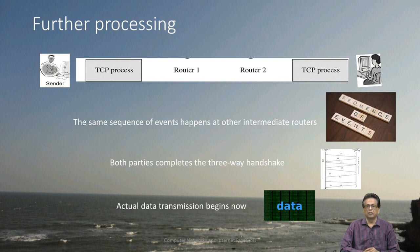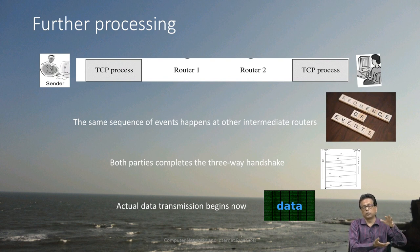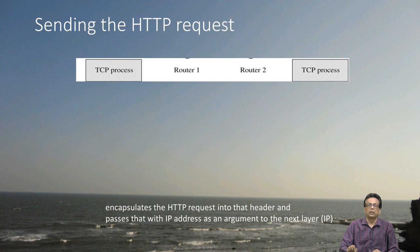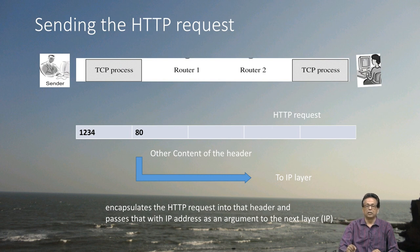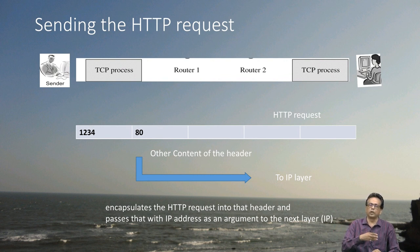Once that is done, actual data transmission begins. In this actual data transmission, the HTTP request is being sent and a response is received after all this processing. The HTTP request is constructed and the receiving port number 80 indicates HTTP client-to-server communication, and it sends this to the IP layer. Remember, this HTTP request is embedded into a TCP segment, and the TCP segment gives it to the IP layer, which embeds it into a packet. The packet is embedded into frames, then converted to bits and sent across.